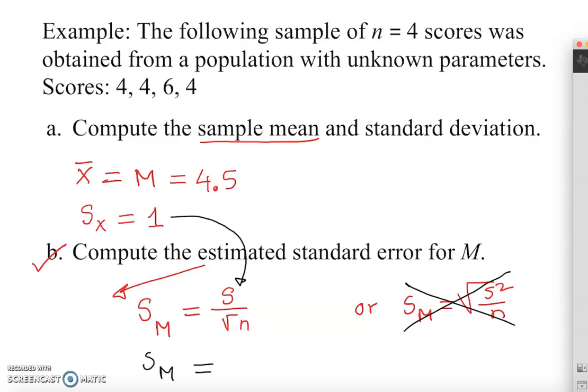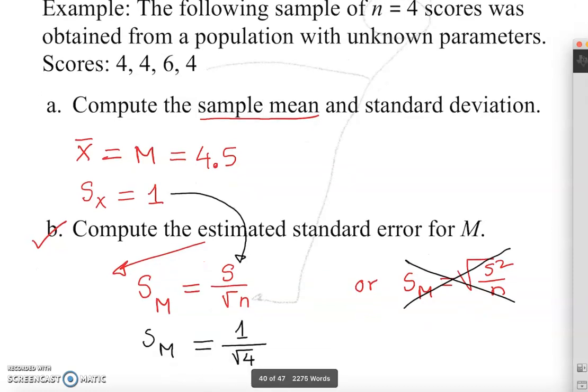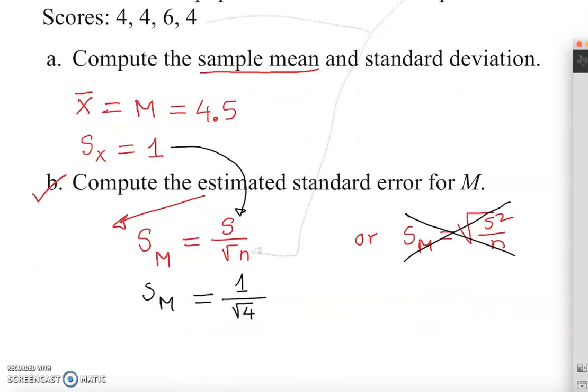So s sub M, which is estimated standard error of the mean, is equal to standard deviation is 1 over square root of n. In this case, square root of 4. Square root of 4. Remember, these are the 4 samples, these are the 4 samples.